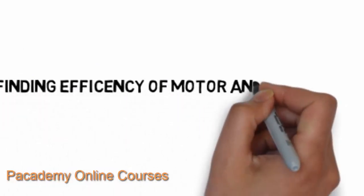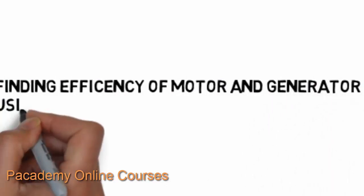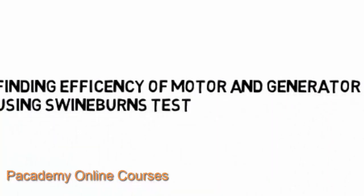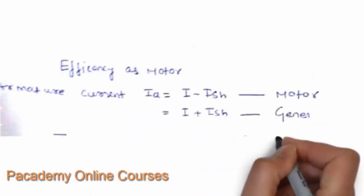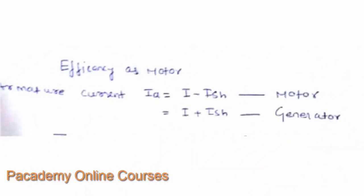Now, how do you find the efficiency of the motor and the generator using these test results? To find the motor efficiency, the armature current IA is taken as I0 minus ISH. For the generator, IA is I0 plus ISH — supply current plus field current — because the generator is outputting current.